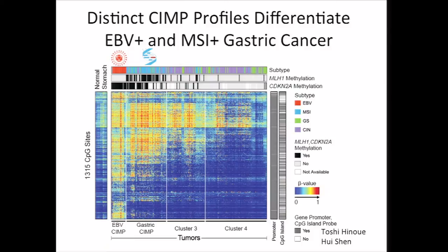What made EBV-positive tumors their own group was mostly driven by strong methylation differences. Agnostic methylation clustering showed that the EBV-positive tumors form their own separate group, distinct from the hypermethylation seen in classic CIMP or MSI tumors. These MSI tumors largely have silencing of MLH1, but none of the EBV CIMPs have that, helping define this as a distinct group.